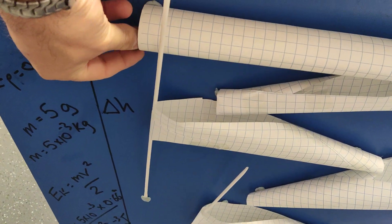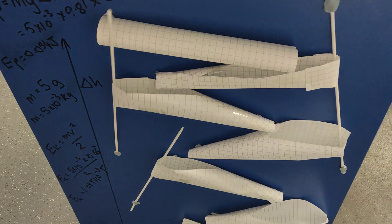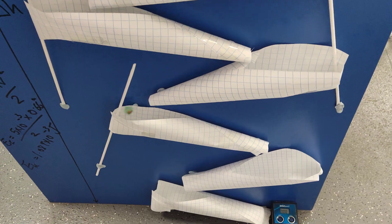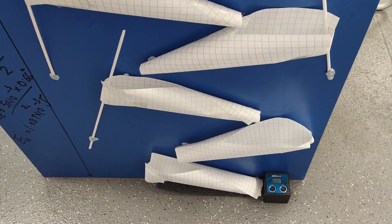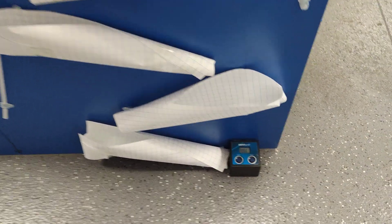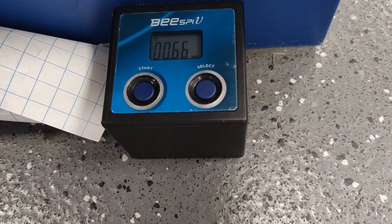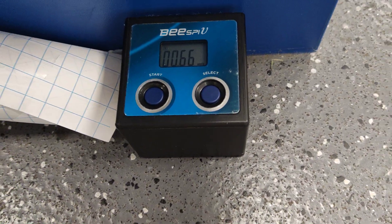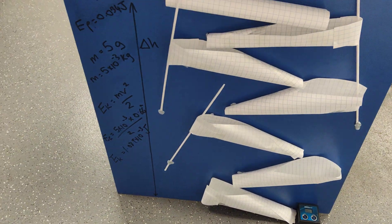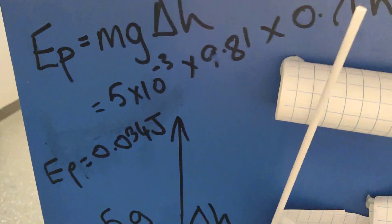So I'll just start my little ball off here and it goes down the run. What's amazing is every time I do this it's the same — 0.66 meters per second. So what are the calculations? Let's go in a bit closer.